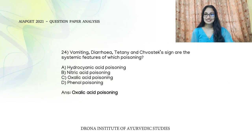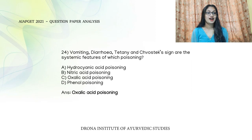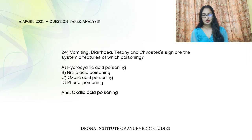The next toxicology question asks: vomiting, diarrhea, tetany, and chosteczine are systemic features of which poisoning? The answer is Oxalic Acid poisoning.